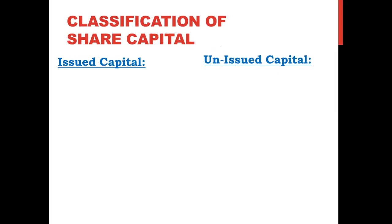Moving to the next topic — continuing with the classification of share capital. Authorized capital is divided into two parts: number one, issued capital; and number two, unissued capital.